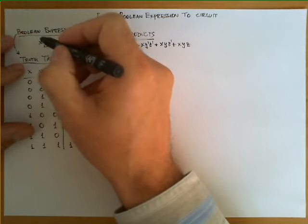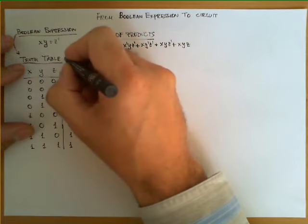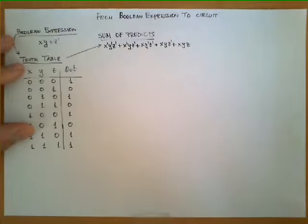So far what we have done is derive from this expression the truth table and from the truth table the sum of products.